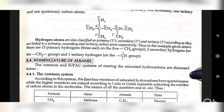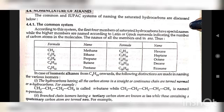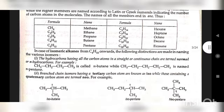Nomenclature of alkanes — common system: According to this system, the first four members of saturated hydrocarbons have special names, while higher members are named according to Latin or Greek numbers indicating the number of carbon atoms. The names of all members end in '-ane'. In case of isomeric alkanes from C₄H₁₀ onwards, the following distinctions are made: hydrocarbons having all carbon atoms in a straight or continuous chain are termed 'normal' (n-); branched-chain isomers having a tertiary carbon atom are known as 'iso', while those containing a quaternary carbon are termed 'neo'.